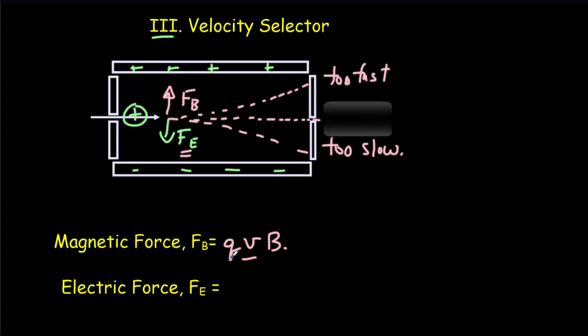Let's look at the condition for those two forces to be balanced. The magnetic force is given by QVB. The electric force is given by Q times E. If I set those equal, QVB equals QE, then the speed will be given by the ratio of the electric field to the magnetic field.